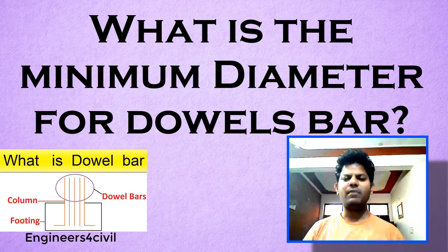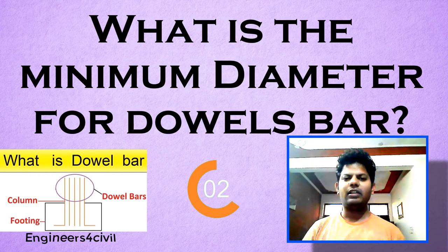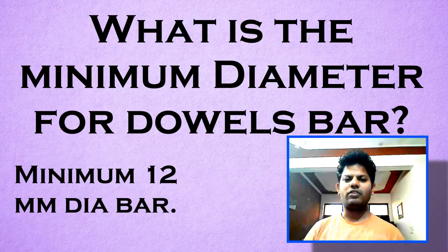What is the minimum diameter of double bars? Double bars connect two elements, and the minimum bar for doubles is 12 mm dia.